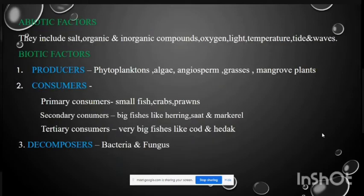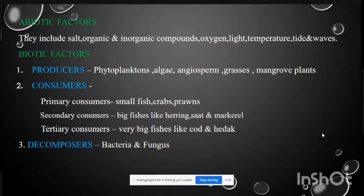Marine ecosystems also have abiotic and biotic factors. Abiotic factors include salt, organic and inorganic compounds, oxygen, light, temperature, tides, and waves. Biotic factors are organized into producers, consumers, and decomposers. Producers include seagrass plants, algae, angiosperms, grasses, and mangrove plants.